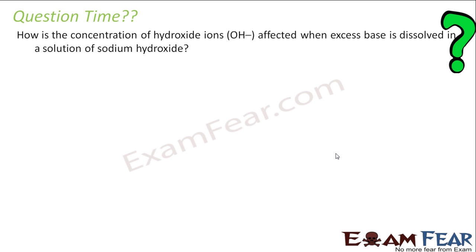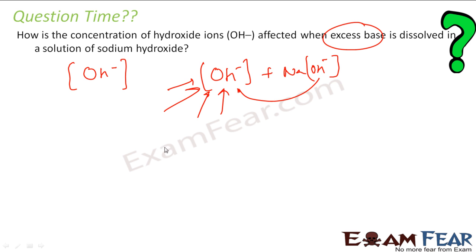Why is the concentration of hydroxide ion affected when excess base is dissolved in the solution of sodium hydroxide? How? So in this case, I am saying that I have this OH, OH minus ion, excess base is dissolved. We have some base already. So we have some base, OH minus. In that we are adding sodium hydroxide. So what I am doing is I am pumping in more and more hydroxide ions, and thus you can say that the strength of OH minus in this case is increasing. Why? Because I am pumping in more hydroxide ions.